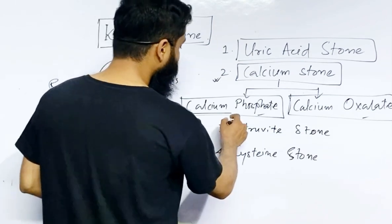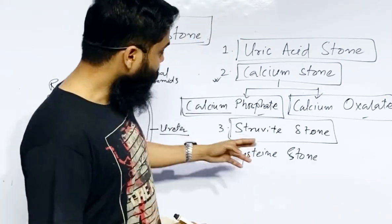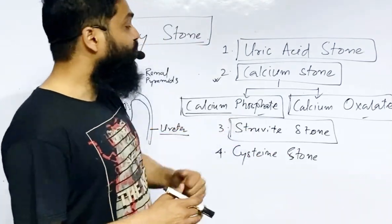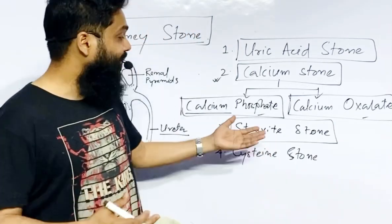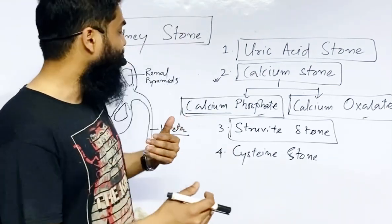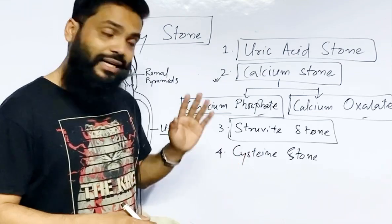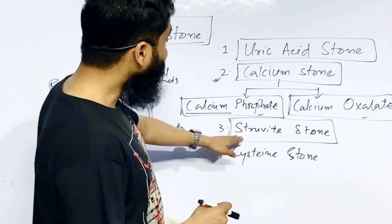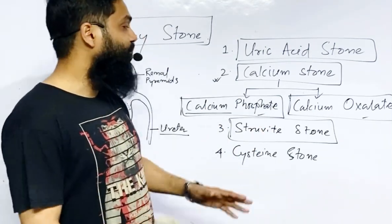Struvite stone is the third important form of stone. It forms when our kidney is not healthy for a long time — such as when we have any form of infection or any other chronic problem in our kidney. This stone cannot form if the problem is acute; only if there is a chronic kidney problem. Struvite stone formation is not as common compared to the above two types.